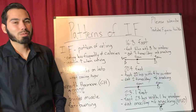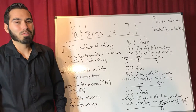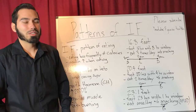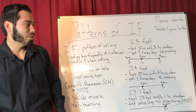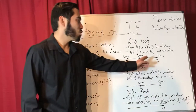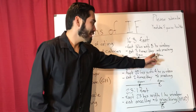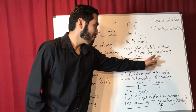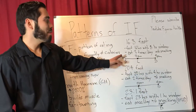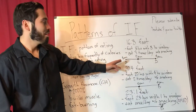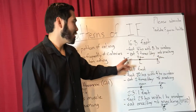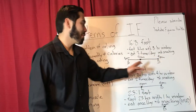Sleep is very important for weight loss — that's where most of your weight loss occurs, believe it or not. So that's a 16 hour fast from 4 p.m. all the way to 8 in the morning, with an 8 hour eating window from 8 a.m. to 4 p.m.